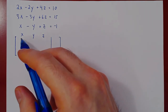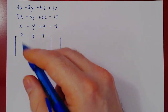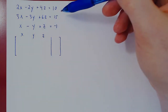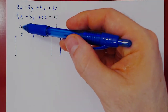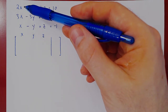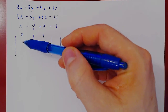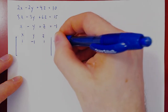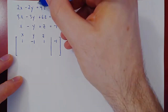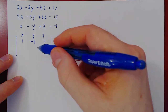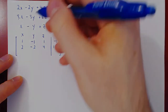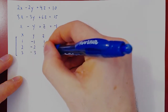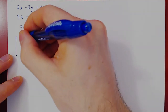We always want to get a leading one in the top row in the leftmost column if possible. We can do slightly better by writing the third equation instead of the first and vice versa. This will already give us a leading one in the top row, so we have one, negative one, one, negative one as the third equation, and we rewrite the first two equations in the bottom two rows: two, negative two, four, ten and three, negative three, six, fifteen.